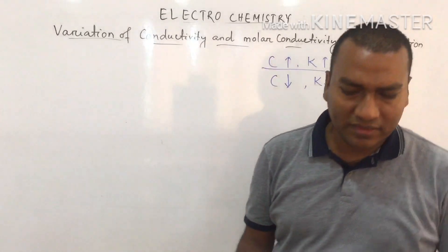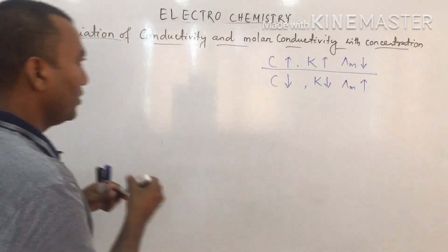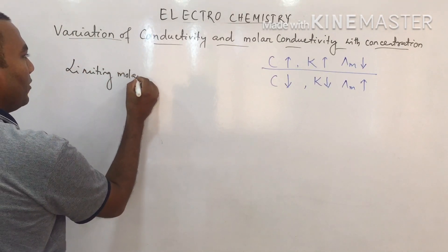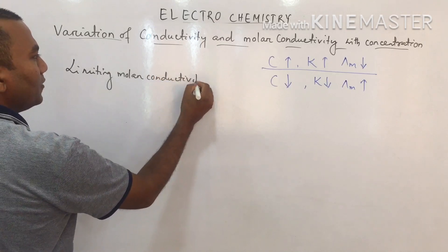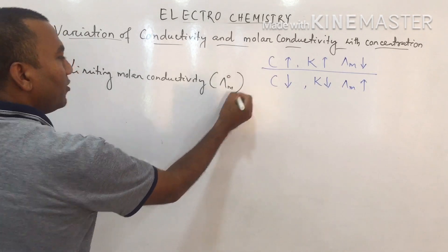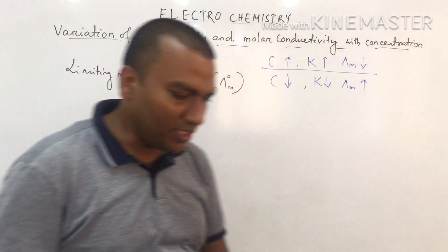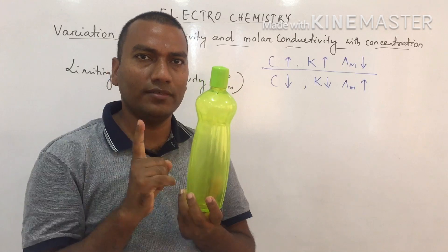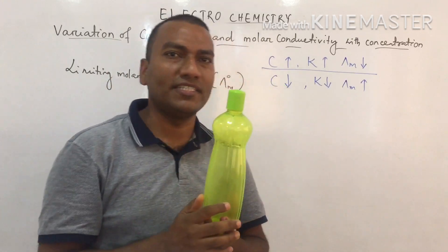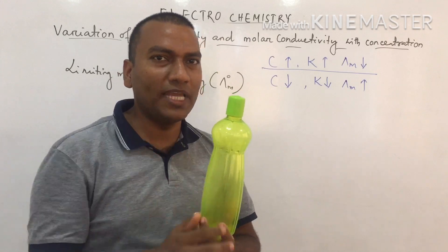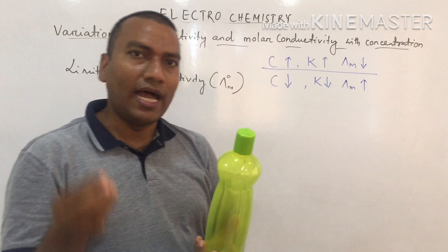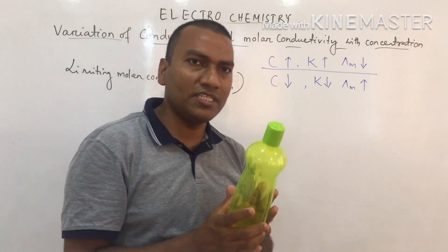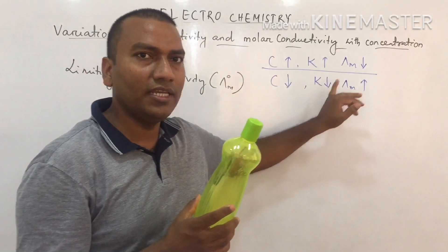What is limiting molar conductivity (symbol λm⁰)? Suppose we take 1 liter of water and add 1 mole NaCl (58.5 g). We can measure its conductivity and molar conductivity using a conductivity cell. Now convert the same solution to 10,000 liters of water — the amount of NaCl is still 58.5 g, but the solvent is very large compared to the solute.